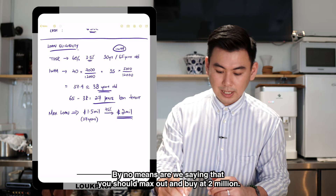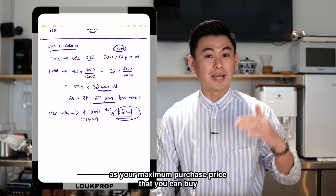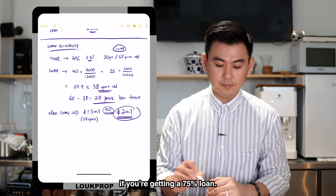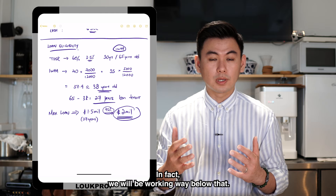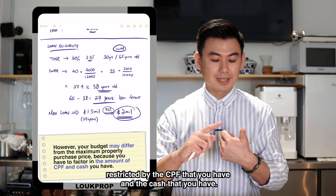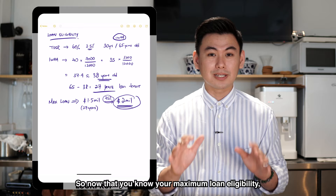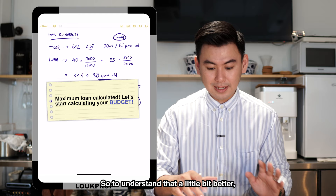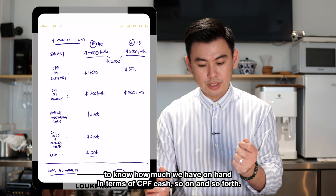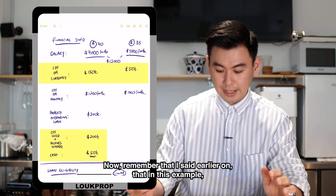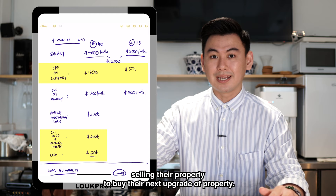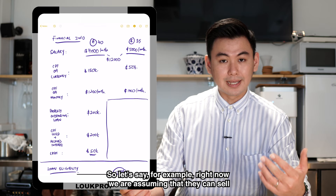By no means are we saying you should max out and buy at $2 million. The actual budget is still restricted by the CPF you have and the cash you have available. So now that you know your maximum loan eligibility, it's time to calculate your actual budget. Let's go back and look at the figures — how much we have on hand in terms of CPF and cash. In this example, the couple will be selling their property to fund their next upgrade.